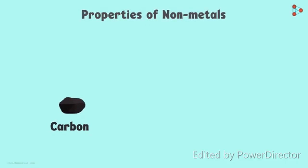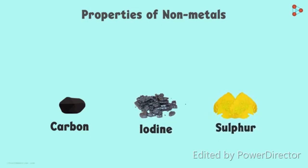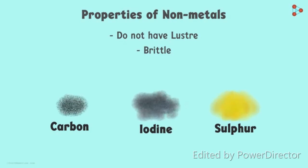Non-metals like carbon, iodine, and sulfur do not have luster. That means they do not shine and are brittle in nature. Brittle means they cannot be beaten into wires or sheets because they break when bent, beaten, or pressed. Non-metals are non-sonorous as they may not make any sound.